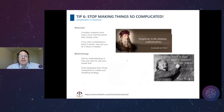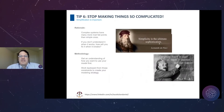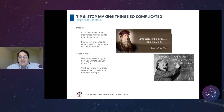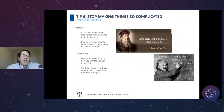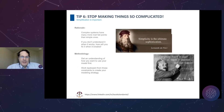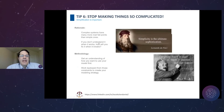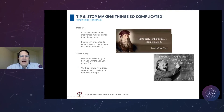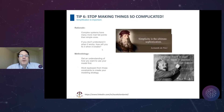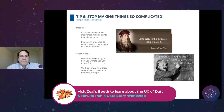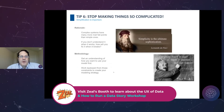Tip number six: stop making things so complicated. Simplicity is the ultimate sophistication, as Leonardo da Vinci said, and Einstein said everything should be as simple as possible but not simpler. Complex systems have many more fail points than simple ones. If you don't understand it when it works, how are you going to fix it when it breaks? Get an understanding of how you want to use your model, then work backward from those constraints to create your modeling strategy.